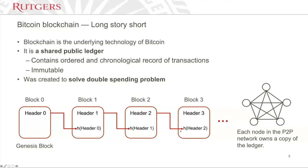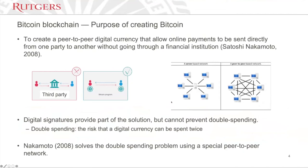An easy way to understand blockchain is just to remember this diagram: we have different blocks, each following block refers to the previous block's header, and each one in the peer-to-peer network has the same copy of the data.